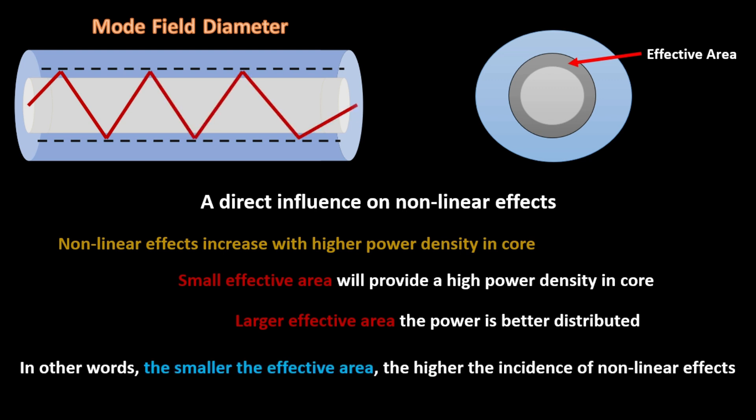In other words, the smaller the effective area, the higher the chance of non-linear effects. That's why larger effective area fibers are better.